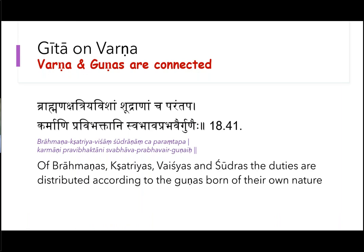The Gita says: Brahmana Kshadriya Visham, Shudranamcha Parantapa, Karmani Pravibhaktani, Swabhava Prabhavaihi Gunaihi. The work that each one of them must do is contingent on their Swabhava, and that Swabhava comes out of their Guna. The three Gunas finally bring a certain sort of Swabhava, and Krishna says that Swabhava must be linked to whether you should be a Brahmana, Kshatriya, Vaishya, or Shudra.